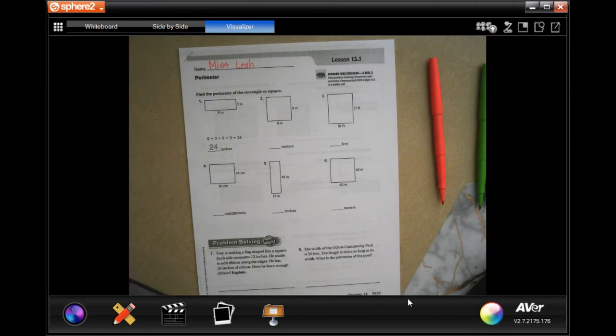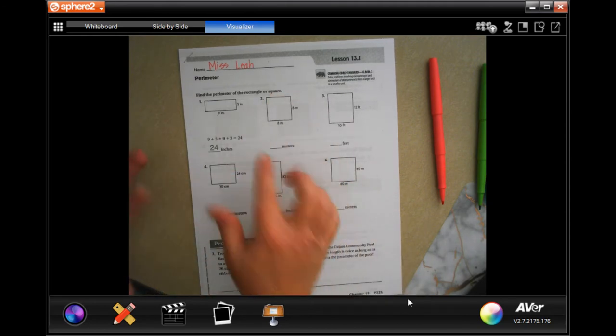So when we're doing perimeter, we're just adding up the sides. That's all it is. Perimeter is pretty easy—it's just adding up all of the sides all the way around.